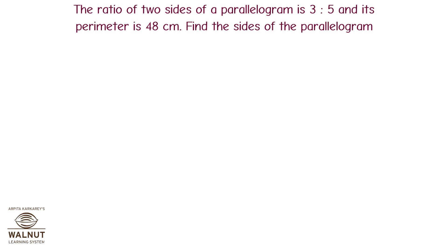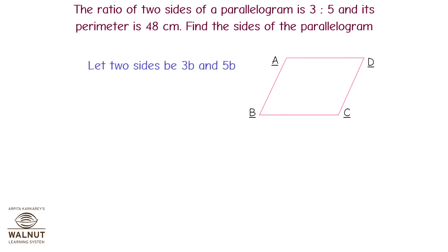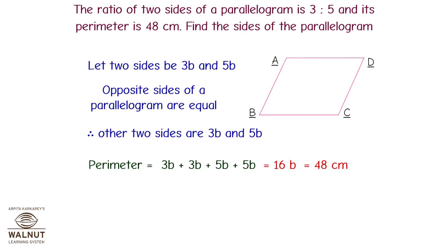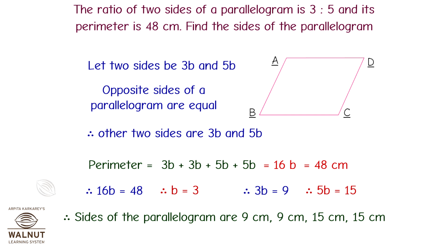The ratio of two sides of a parallelogram is 3:5 and its perimeter is 48 cm. Find the sides. Let the two sides be 3b and 5b. The perimeter equals 3b + 5b + 3b + 5b = 16b = 48 cm. Therefore b = 3, so 3b = 9 cm and 5b = 15 cm. The sides of the parallelogram are 9 cm, 9 cm, 15 cm, and 15 cm.